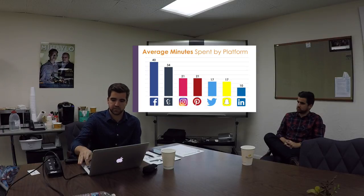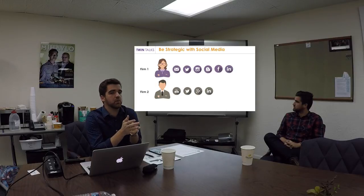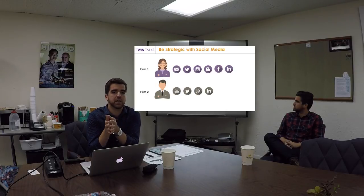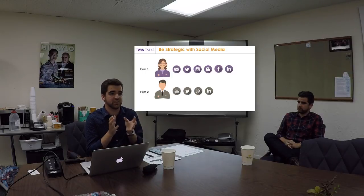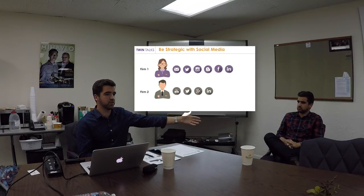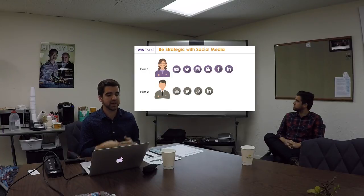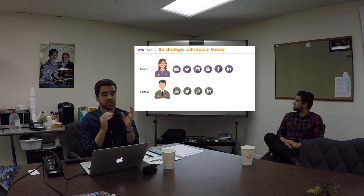Just to put things in perspective, to Ryan's point earlier, we encourage you to be strategic about where you invest your time, energy, and money, especially if you're doing it yourself. For example, Royal Hawaiian — the company Ryan worked for, Firm 1 in this example — email marketing was important, Twitter worked, blogging worked, Instagram worked, Facebook and LinkedIn worked.